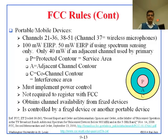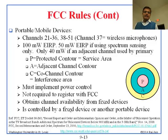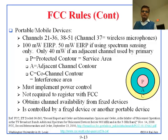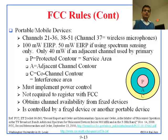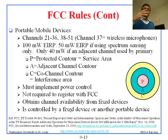Portable devices can use only channels 21 to 36 and 38 to 51, and they are allowed only 100 milliwatt EIRP. This is very small power. The good thing is that portable devices do not have to register with the FCC. They can cause some interference to nearby televisions, but not really too far away. There is also a 50 milliwatt EIRP level for devices using spectrum sensing only — this means you don't need geolocation; you can just sense what is being used and if nothing is there, use 50 milliwatt.